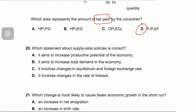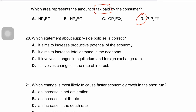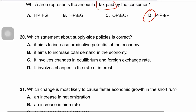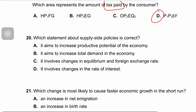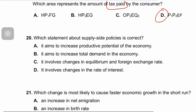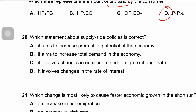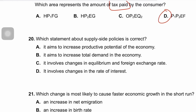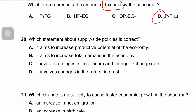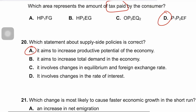Question twenty asks which statement about supply-side policy is correct. Supply-side policies are designed to improve the productive capacity of an economy, focusing on increasing the quantity and quality of factors of production to enhance the economy's potential GDP. The correct answer is A — supply-side policy aims to increase the productive potential of an economy.